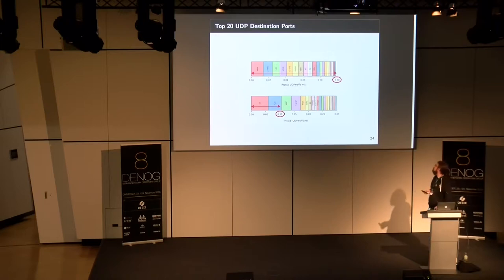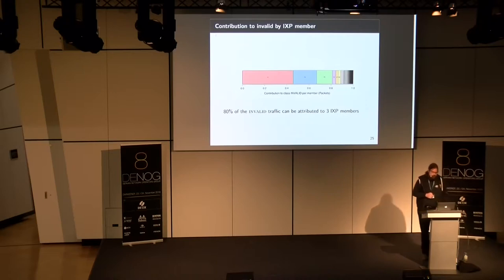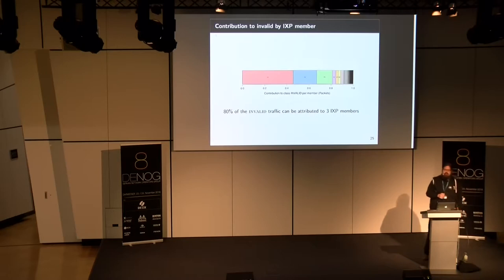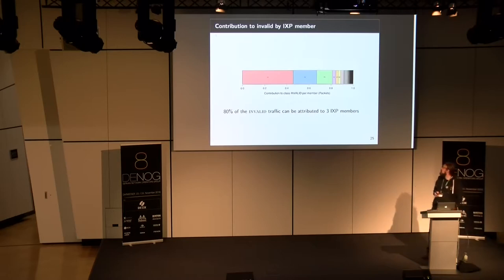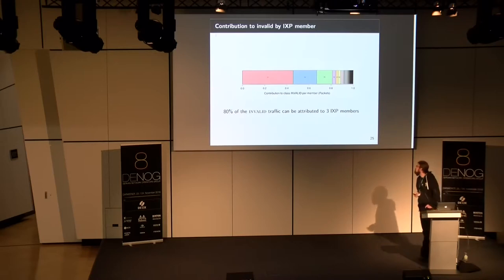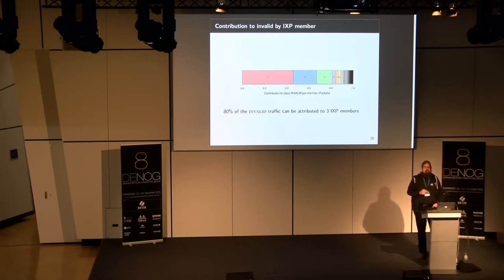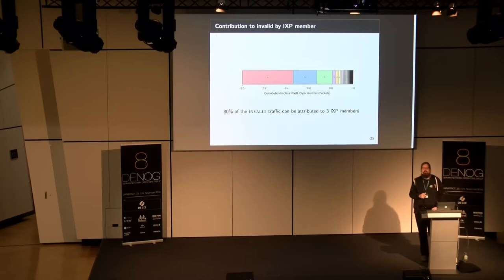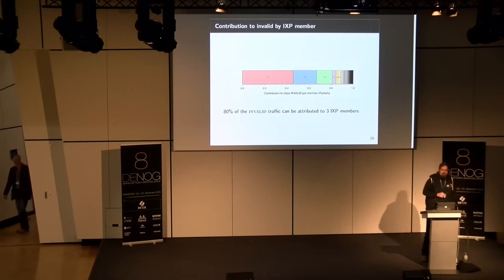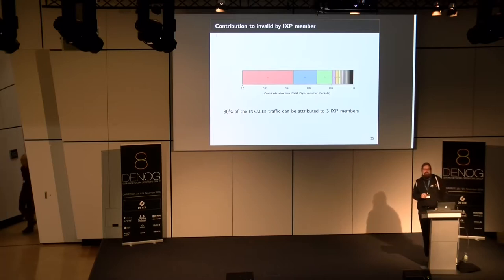What we also see is that only 3 members at the IXP are contributing 80% of this invalid traffic. So we have 3 members that are not filtering, and they have 80% of this traffic. This means everybody counts — if somebody is not filtering, this member or AS or network can be used for attacks. And if this one is filtering, the attackers will find another network, and then we have this cat-and-mouse thing going on again.